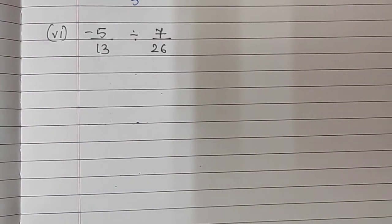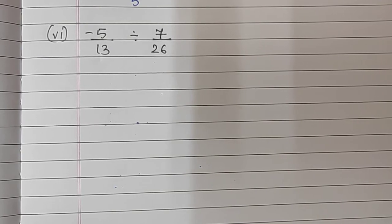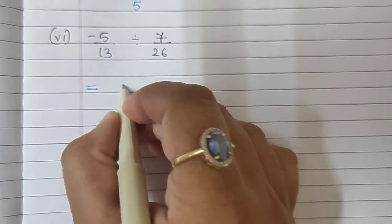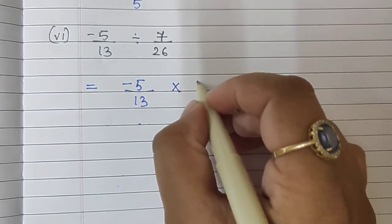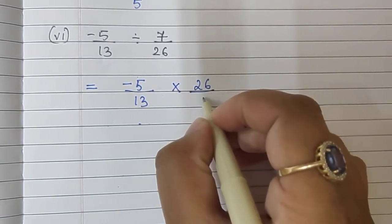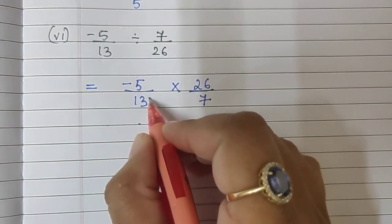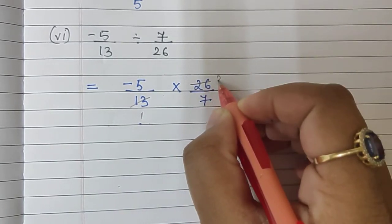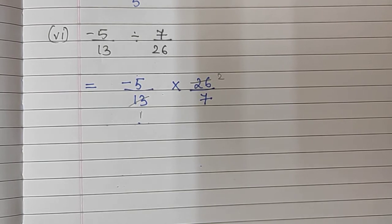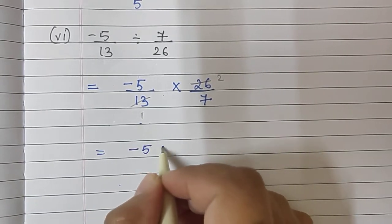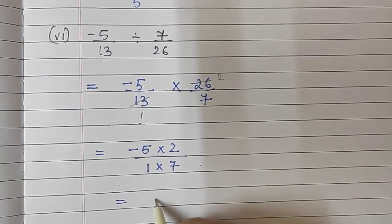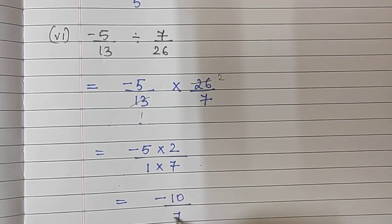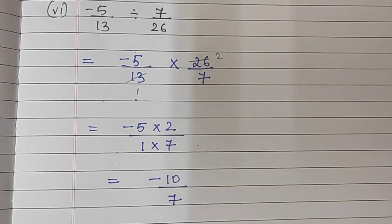Sum number 6 is minus 5 upon 13 divided by 7 upon 26. We write minus 5 upon 13 multiplied by the reciprocal 26 upon 7. Cancellations: 13 ones are 13, 13 twos are 26. Whatever remains: minus 5 multiplied by 2 upon 1 multiplied by 7. 5 twos are 10, so our answer is minus 10 upon 7.